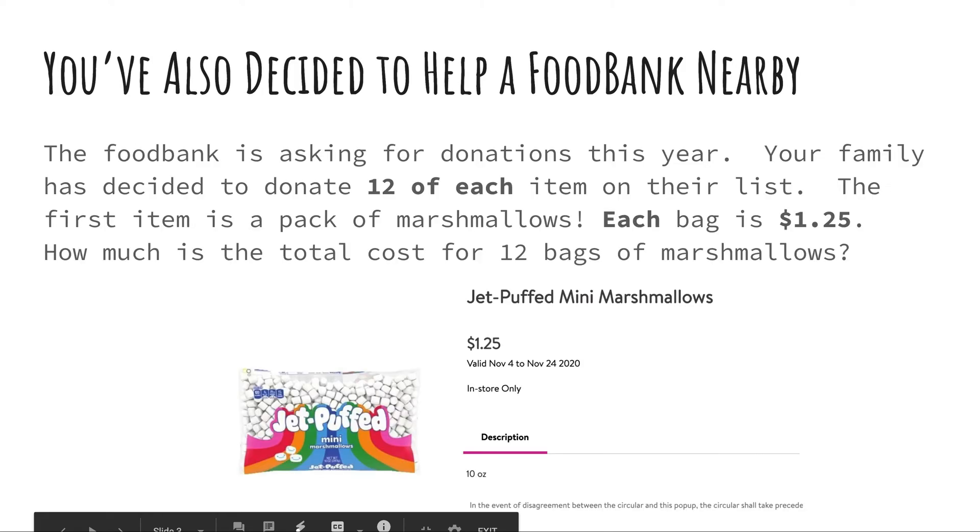Okay, let's go ahead and look at our next problem now. So if we look at this next one, the food bank that's nearby is asking for donations. Your family has decided to donate 12 of each item, each, there's that clue word, right? Multiply each item on their list. The first item is a pack of marshmallows. Each bag, again, each, is $1.25. How much is the total cost for 12 bags of marshmallows? So again, there's that word each. We know they're going to increase because we're buying one bag and each bag is $1.25 and we need 12 of them. So that means we multiply again. So go ahead and do your multiplication now. Let's see what you guys get when you take $1.25 times 12.